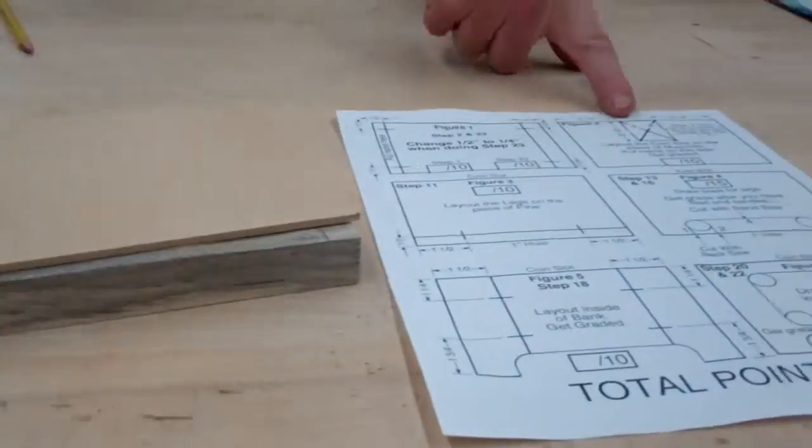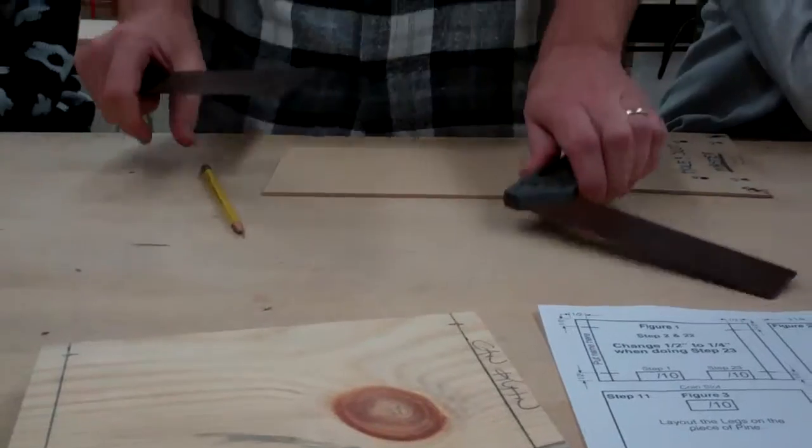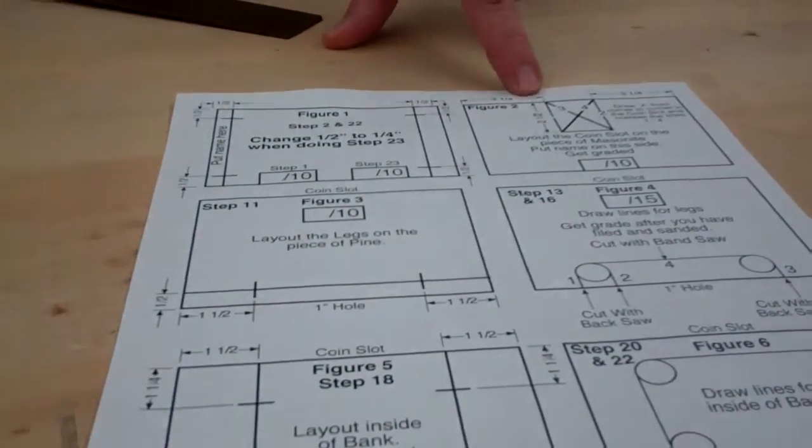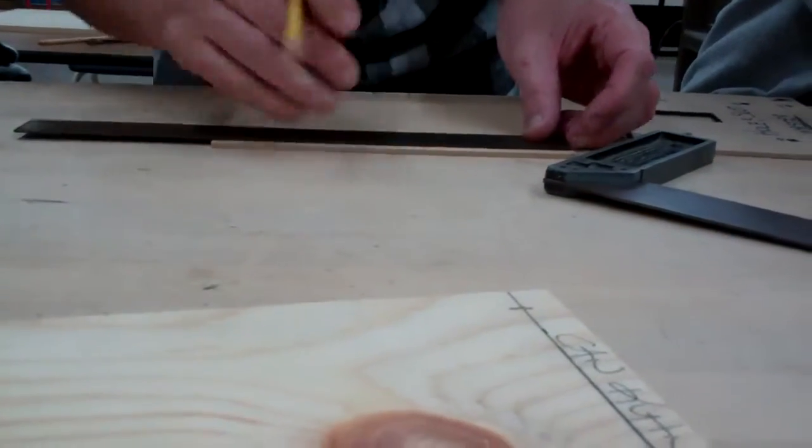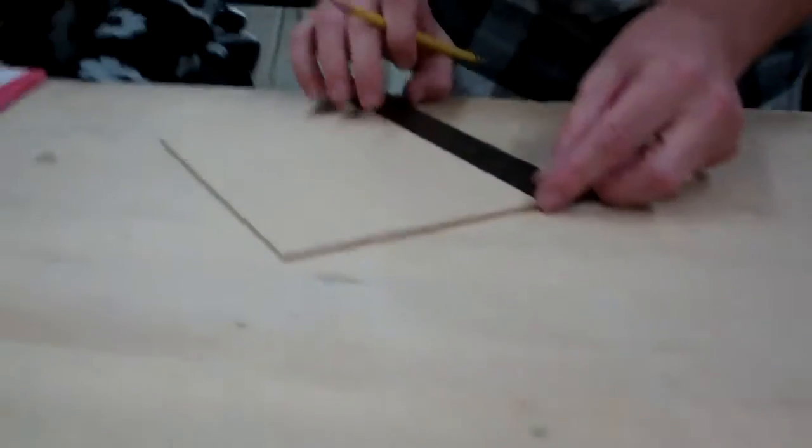How you do that is you follow these directions. You're going to measure three and one-fourths that way and put a mark. Three and one-fourths from the other side and put a mark.